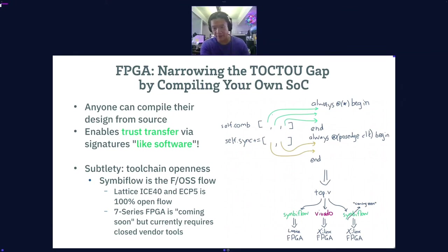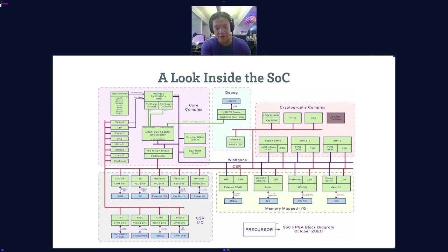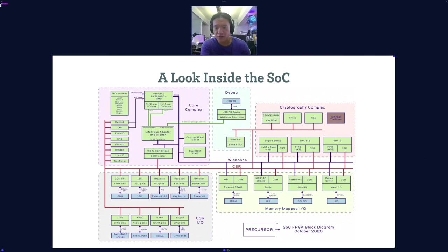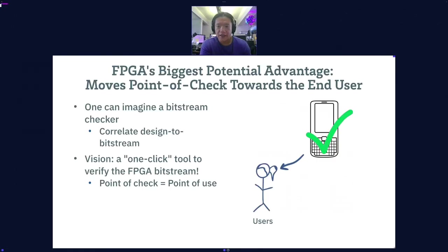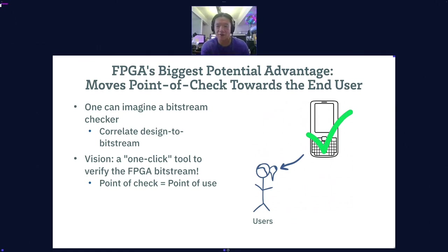There is the question of whether the gate array itself could have an evil backdoor. There are mitigating factors — similar to address space layout randomization on kernels, you can do some random mapping of the hardware to frustrate backdoor attempts. The whole idea is to narrow the time of check to time of use by allowing you to compile your own CPU from source. We'll ship a reference CPU compiled, but you can install the tool chain and compile your own. We also publish diagrams you can use to explore all items inside our system-on-chip. The biggest potential of using an FPGA is moving the point of check closer to the end user. The vision is a one-click tool to verify a bitstream — we're not there yet, but there's a clear path to it.